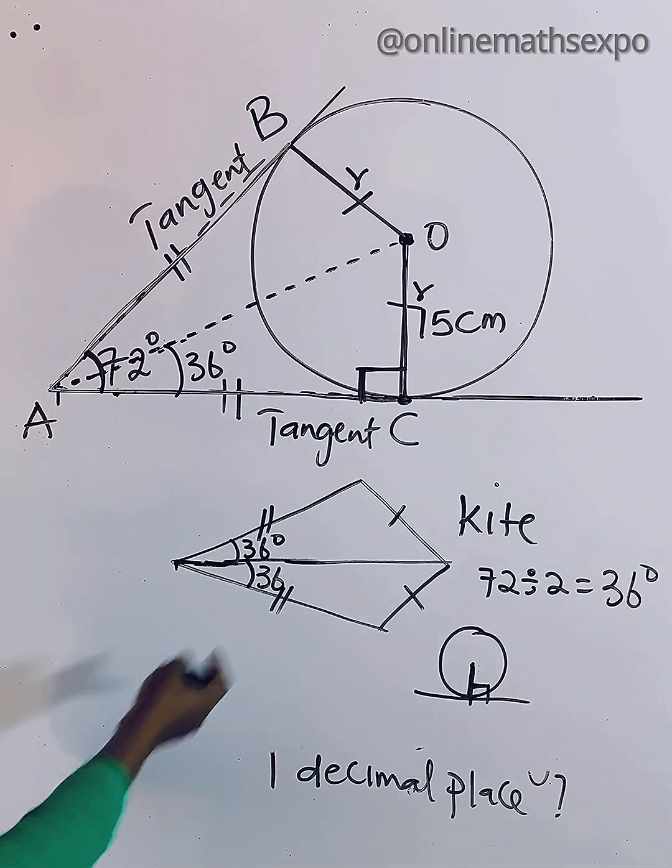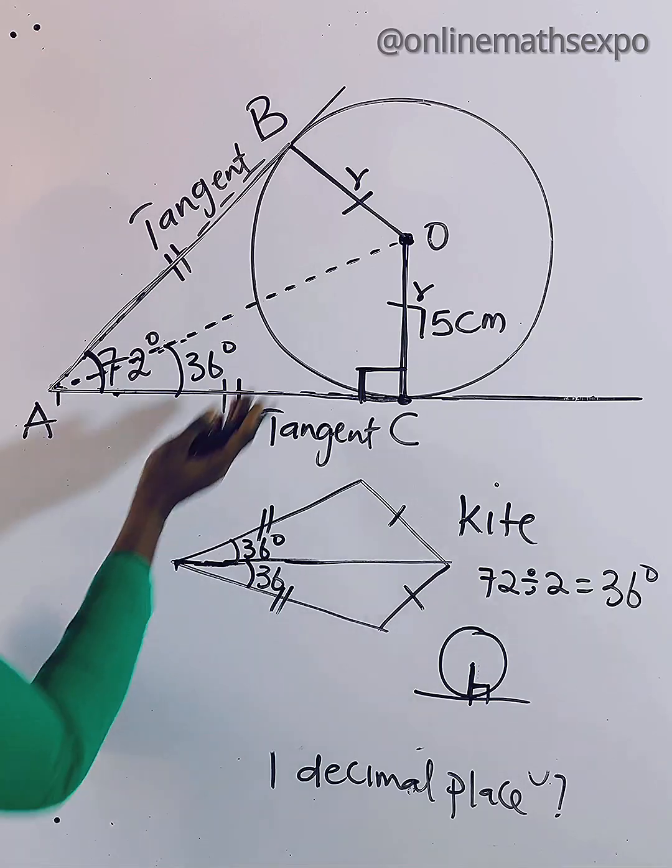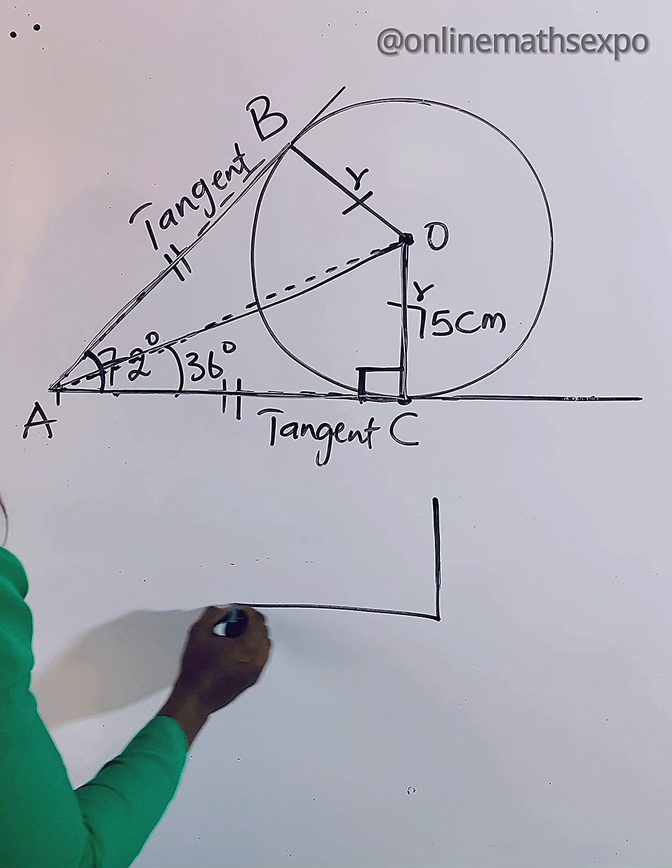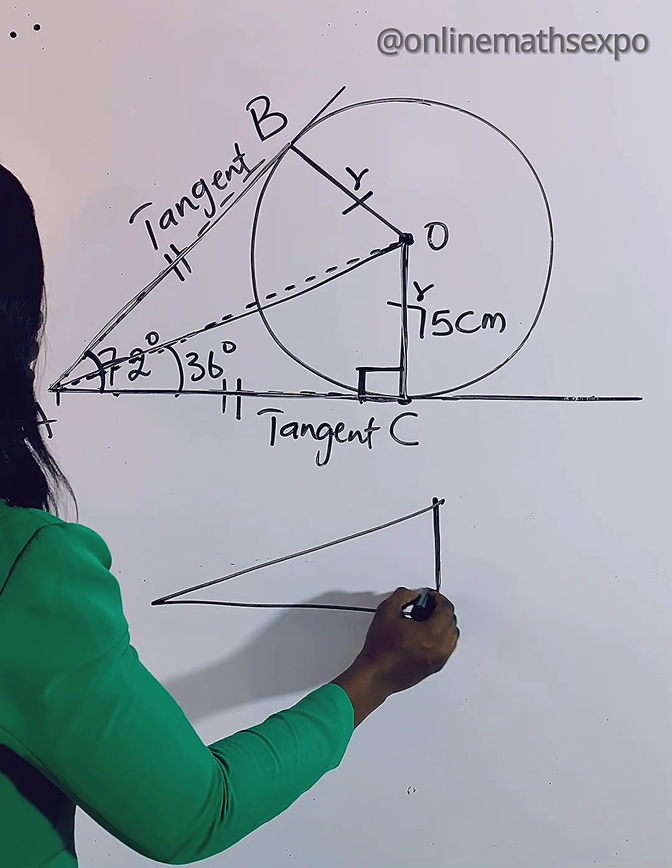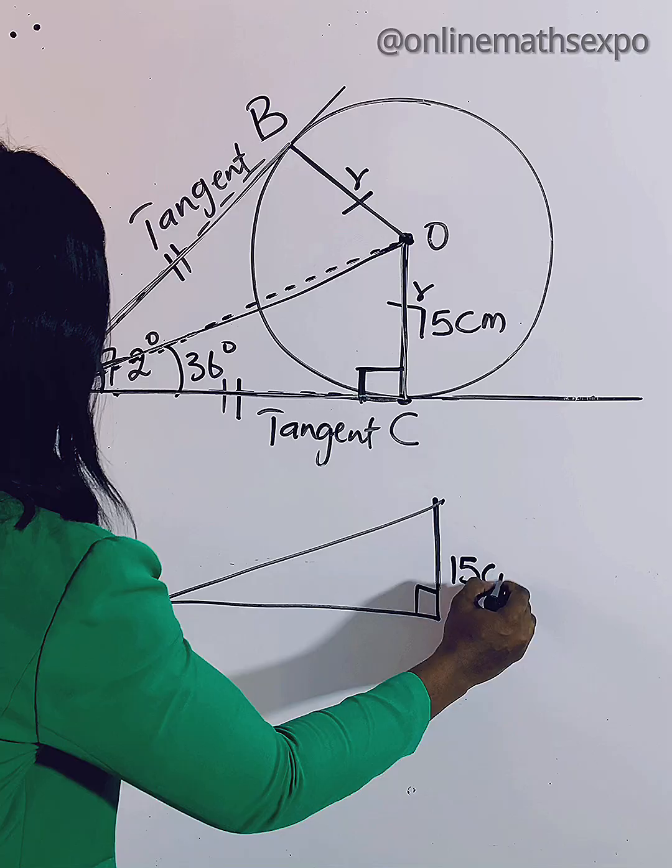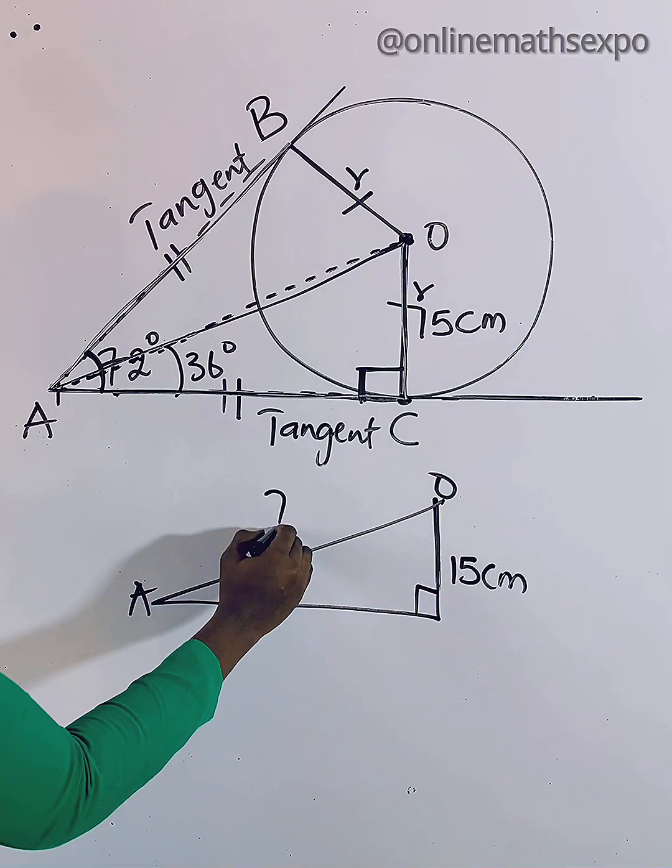To answer this question, let's bring this part of the shape out. So bringing it out, this is what we have: it's right angle here, here is 15 centimeters, and this is the length we want to find.